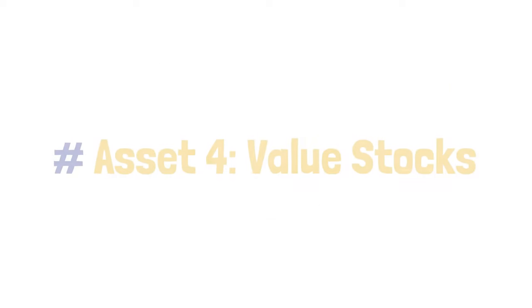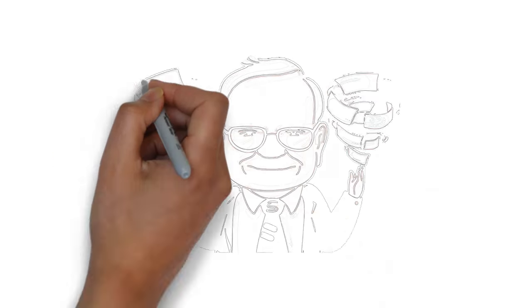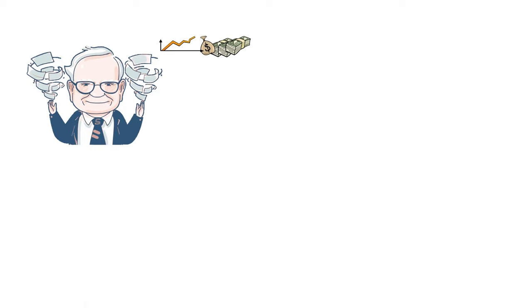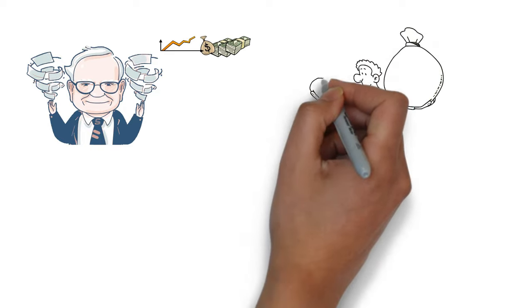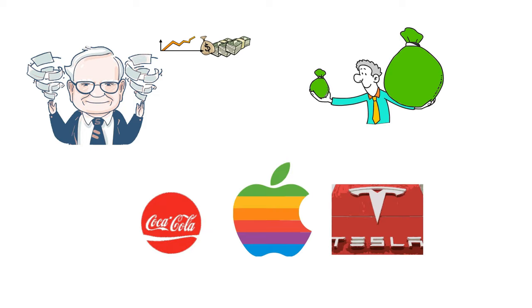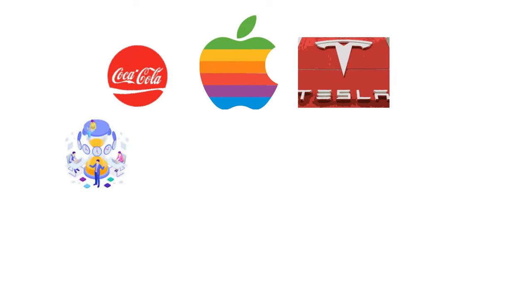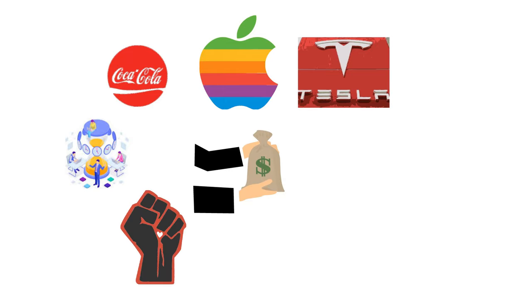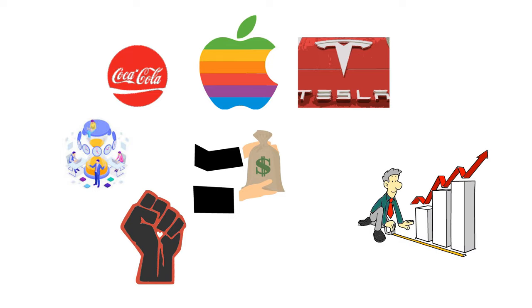Asset 4: Value Stocks. Another core investment strategy inspired by Buffett is investing in value stocks, shares in companies considered undervalued compared to their intrinsic value. Companies like Coca-Cola, Apple, and Tesla have a proven business model, substantial brand value, and a history of profitable performance, making them attractive for long-term investment.